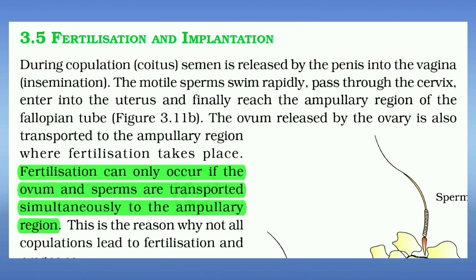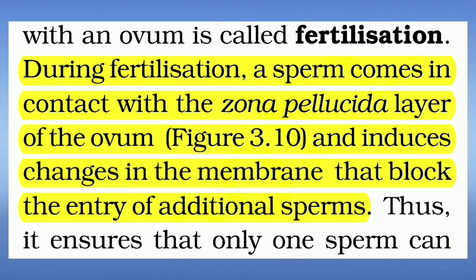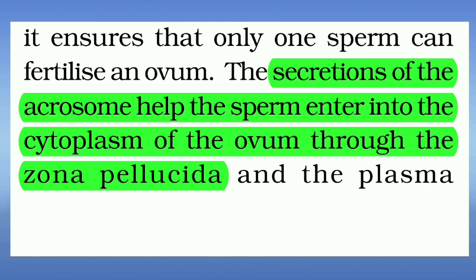Fertilization can only occur if the ovum and sperms are transported simultaneously to the ampullary region. During fertilization, a sperm comes in contact with the zona pellucida layer of the ovum and induces changes in the membrane that block the entry of additional sperms. Enzymes of the acrosome help the sperm enter into the cytoplasm of the ovum through the zona pellucida and the plasma membrane.